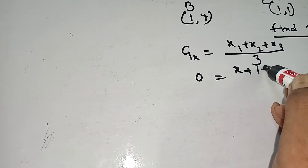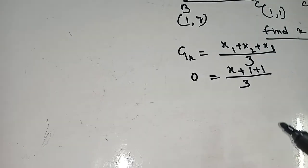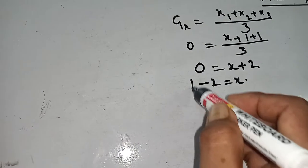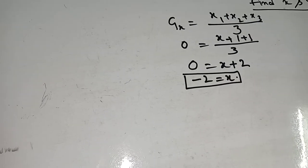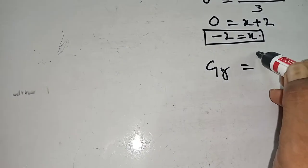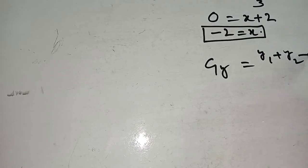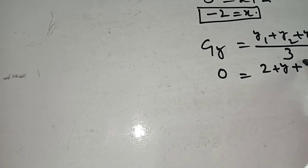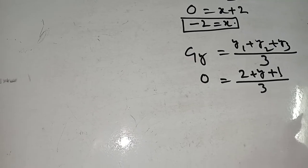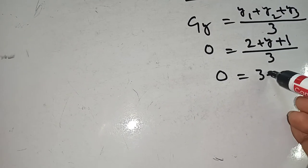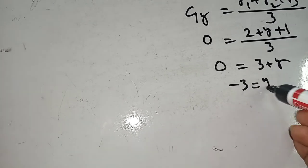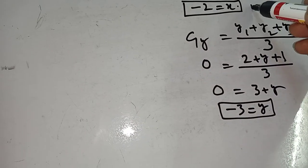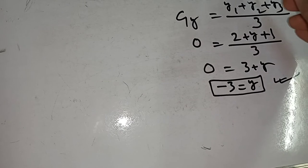x1 is x, so: x + 1 + 1 / 3 = 0, which gives x + 2 = 0, so x = −2. Next, Gy = (y1 + y2 + y3) / 3 = 0. This means 2 + y + 1 / 3 = 0, so 3 + y = 0, giving y = −3. The value of x = −2 and y = −3.